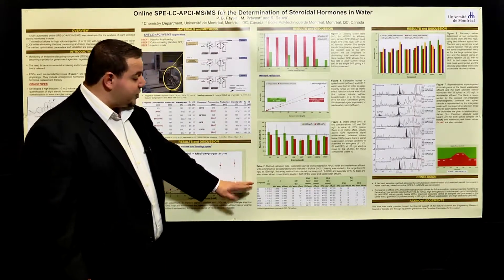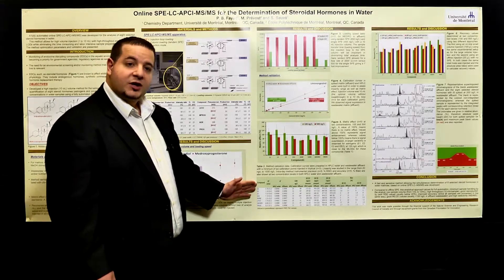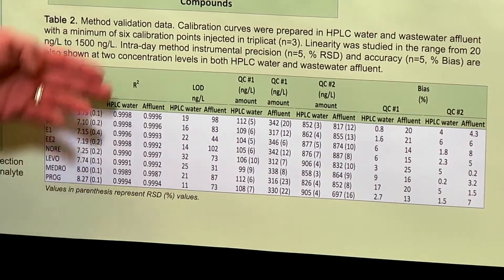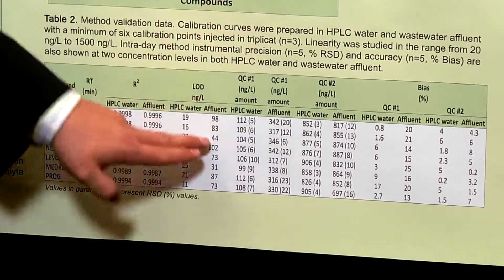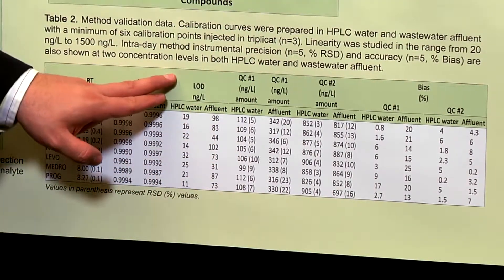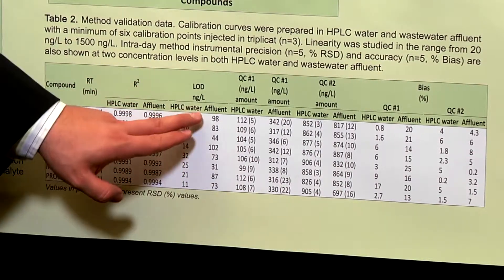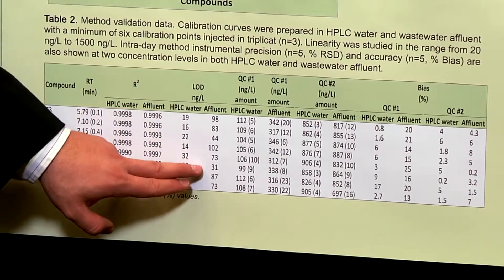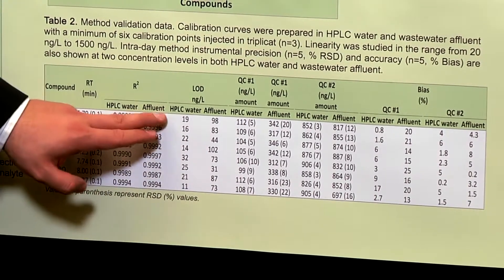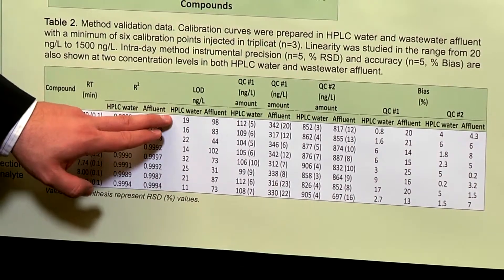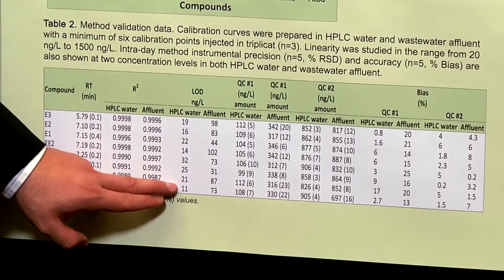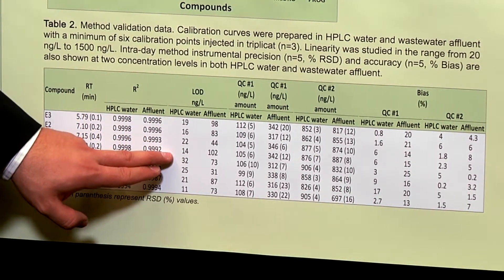Here we have the traditional method validation results including calibration curves, R-squared values, and QC RSDs, which are very good. The limits of detection in effluent wastewater are between 31 and 102 nanograms per liter, whereas in cleaner HPLC-grade water they are between 11 and 32 nanograms per liter.